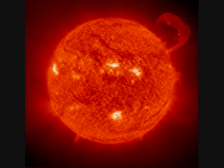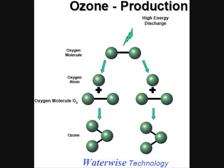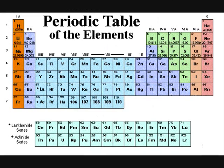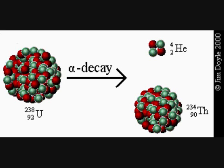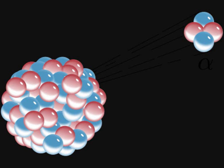High voltage and high current can cause atoms to bond in ways they normally wouldn't. Take a look at the periodic table. The farther down the table you go, the larger the atoms get. Some atoms, including uranium, plutonium, rutherfordium, and nihonium, are all unstable and decay into smaller atoms producing alpha particles.